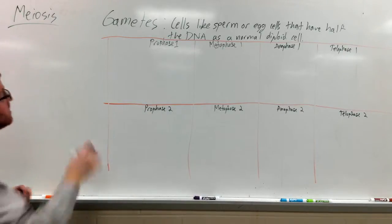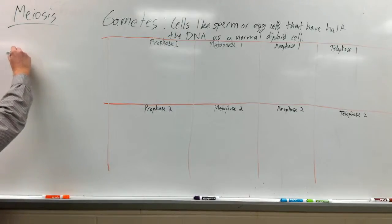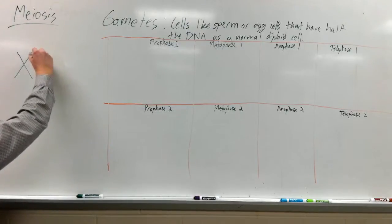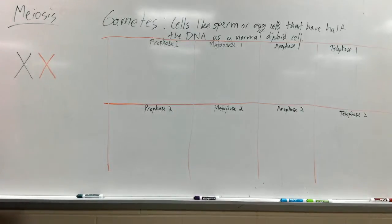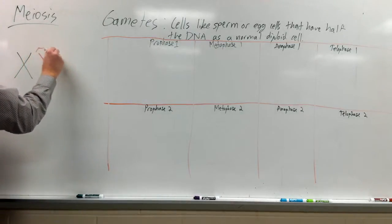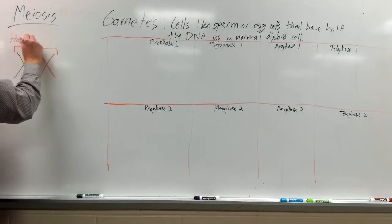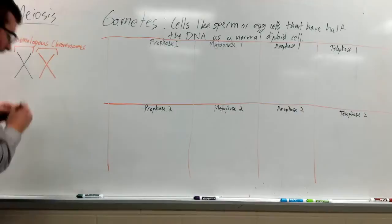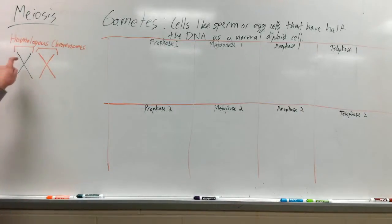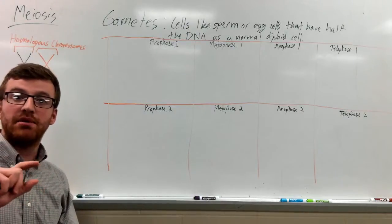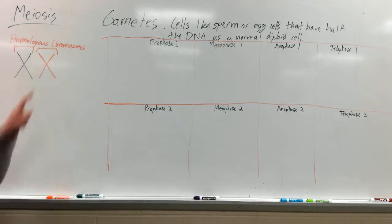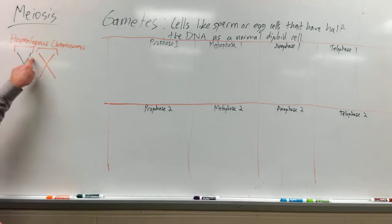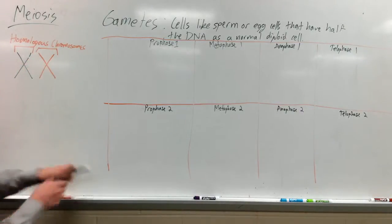By the time it gets to prophase, we're going to have chromosomes. These two chromosomes together are going to be called homologous chromosomes. That just means that one chromosome might have the allele from your mom for maybe brown hair, and the other chromosome might have the allele from your dad for black hair. So they're going to have similar alleles on them, but not necessarily exactly the same.